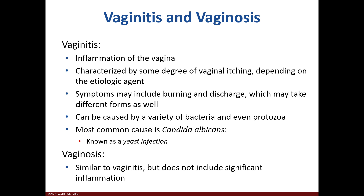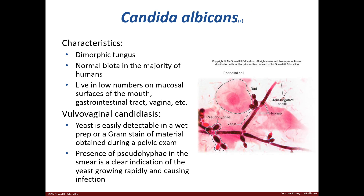Vaginitis is an inflammation of the vagina; a key symptom is itching. Women may also experience burning and discharge. Causative agents include bacteria and protozoans, but Candida albicans is the most common cause, which is a yeast. Vaginosis does not include inflammation. C. albicans is dimorphic, meaning it can shift between two forms. It's part of our normal flora. The yeast can be identified in a wet prep or gram stain, and pseudohyphae are indicative of a yeast infection.